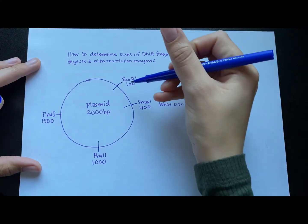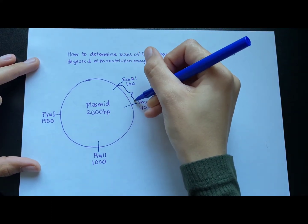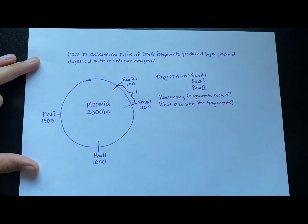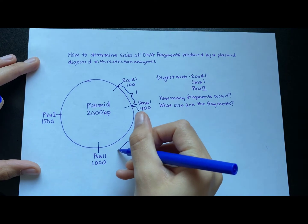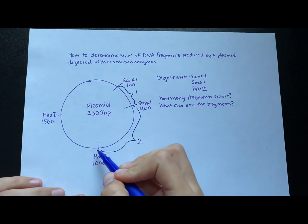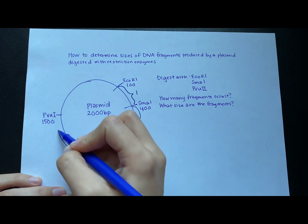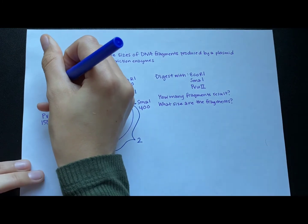Now let's first just determine how many fragments result. Well, if ECO-R1 cut and SMA-1 cut, then in between these two cut sites, one fragment will result. Between the SMA-1 site and the PVU-2 site, there's another DNA fragment that's going to result. And then the rest of the plasmid from the PVU-2 site to the ECO-R1 site is going to be the third and last fragment that results.